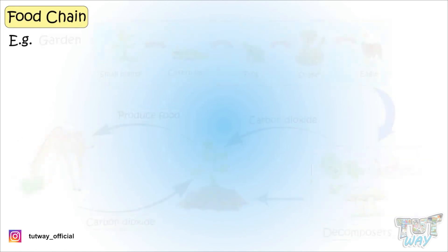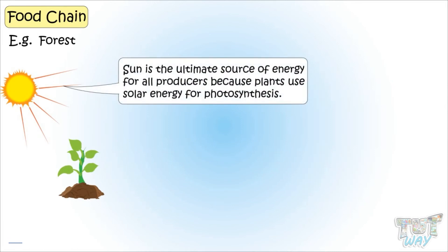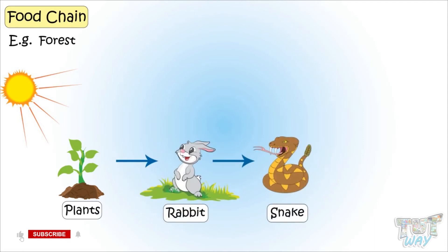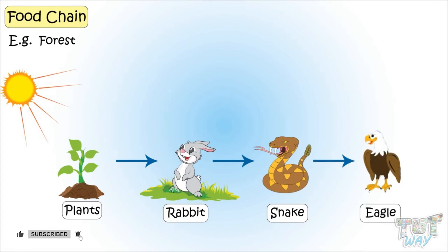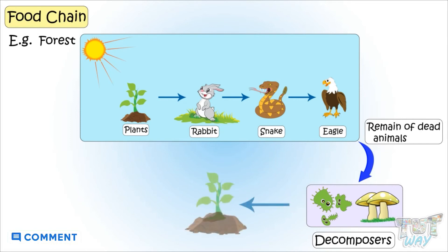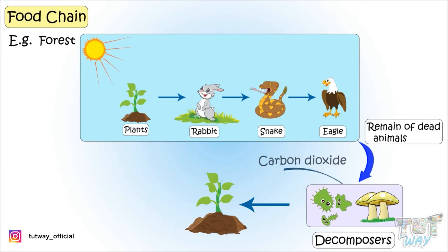Let's see some more food chains. Kids, all food chains start from the sun, as the sun is the ultimate source of energy, because plants use solar energy for photosynthesis. So plants produce food. Rabbits eat plants. Rabbits are eaten by snakes. Snakes are eaten by eagles and vultures. All the dead animals are decomposed by decomposers and the microorganisms, and are again used by plants as nutrients from soil and carbon dioxide from the air, as decomposers also release carbon dioxide into the air when decomposing dead remains.